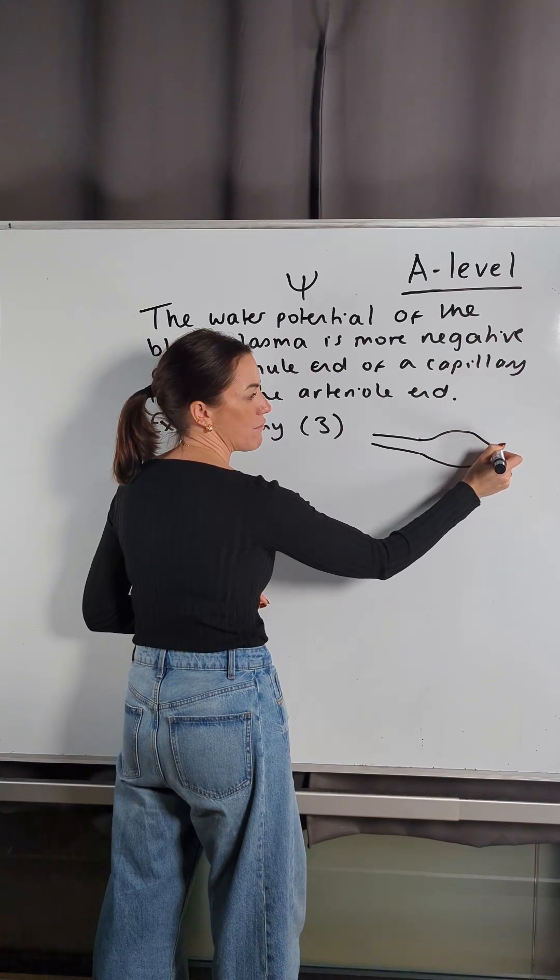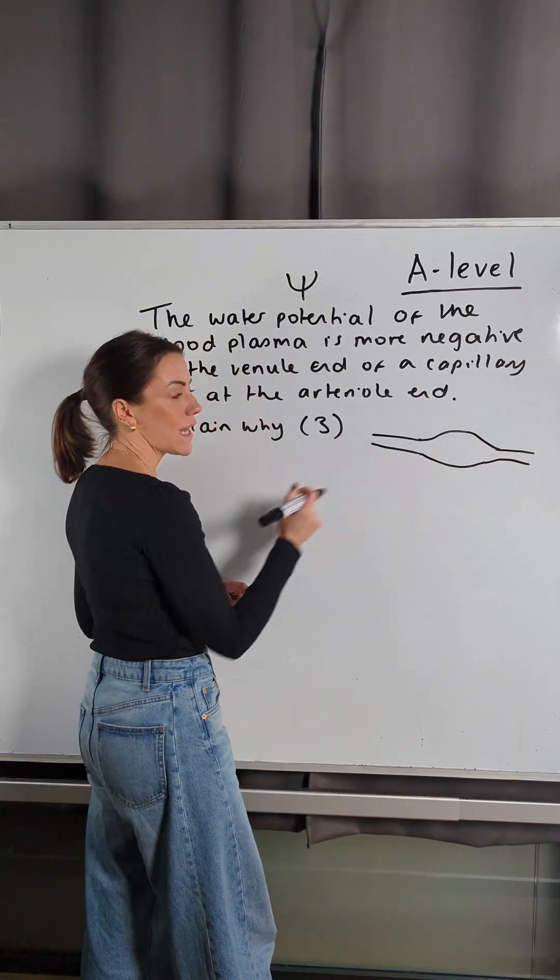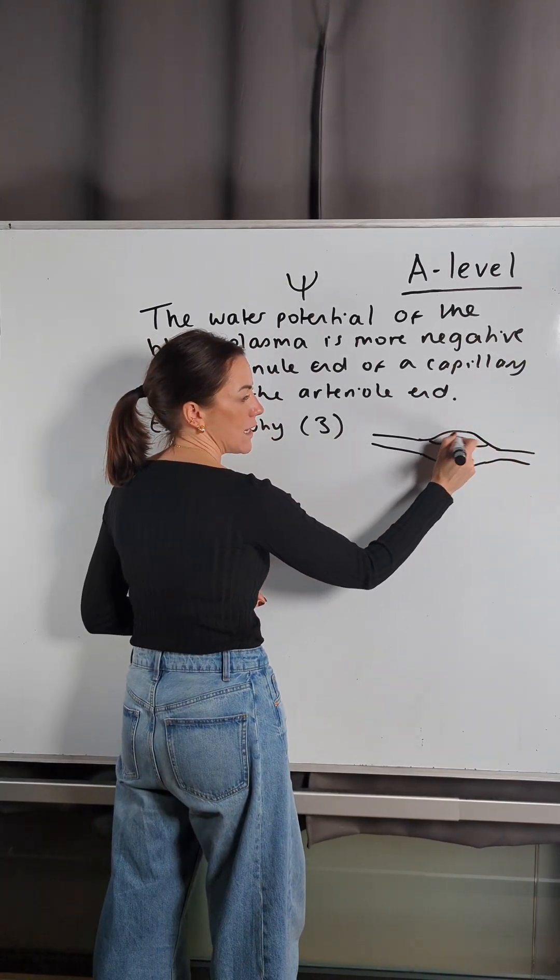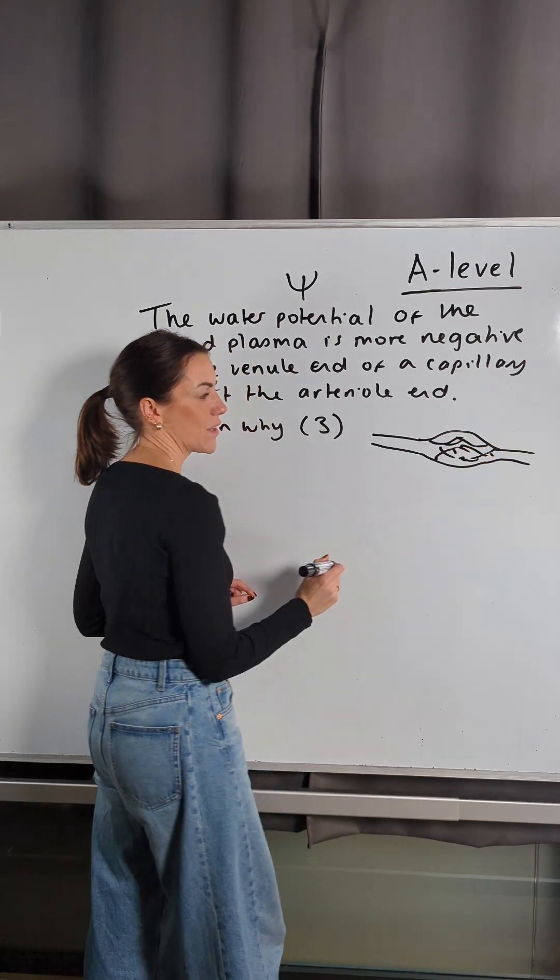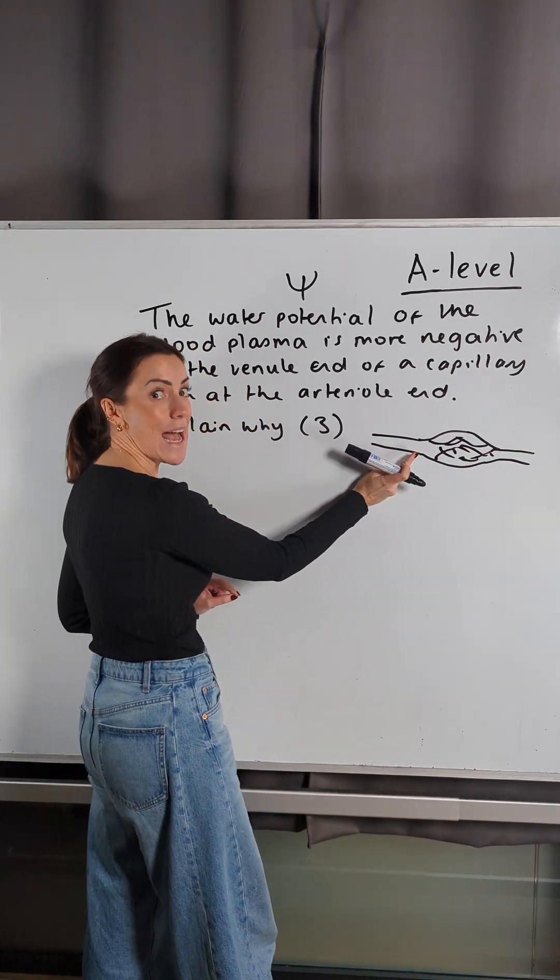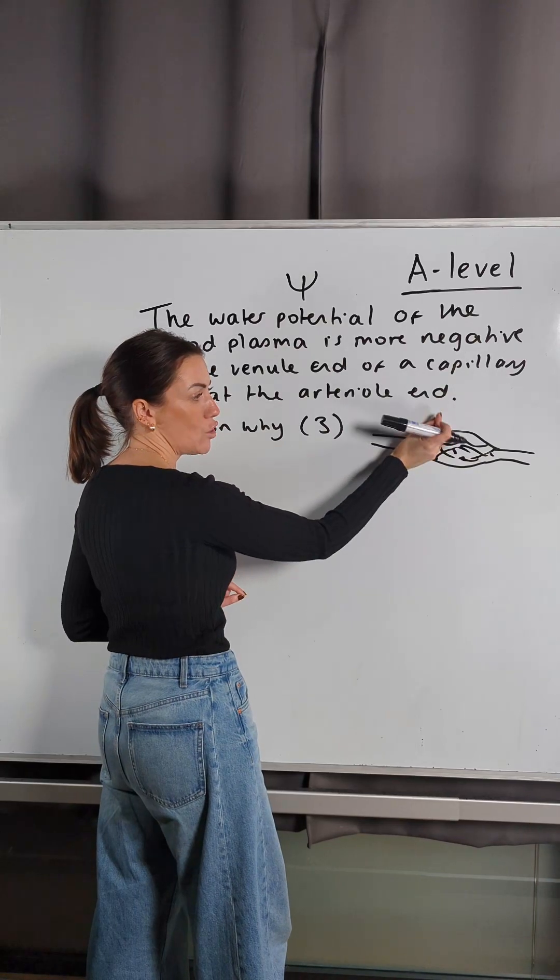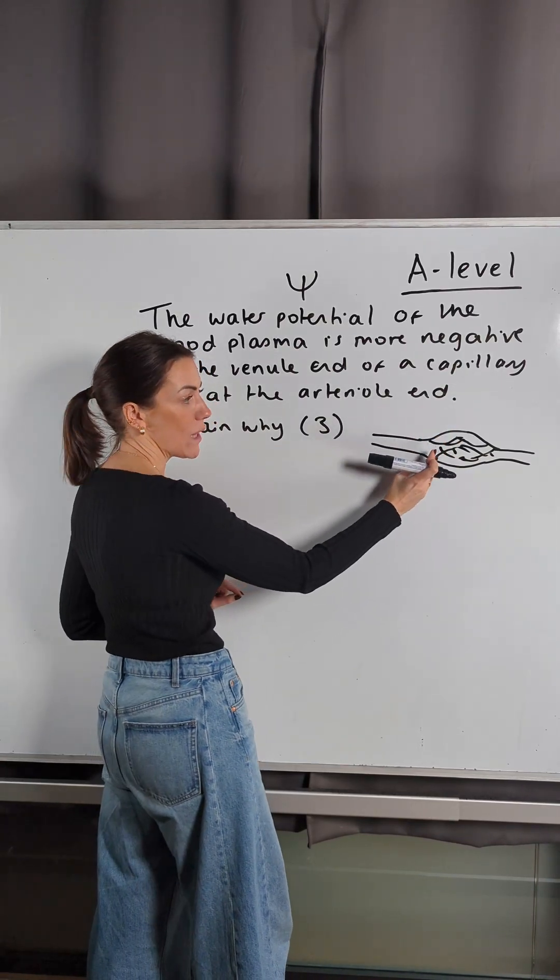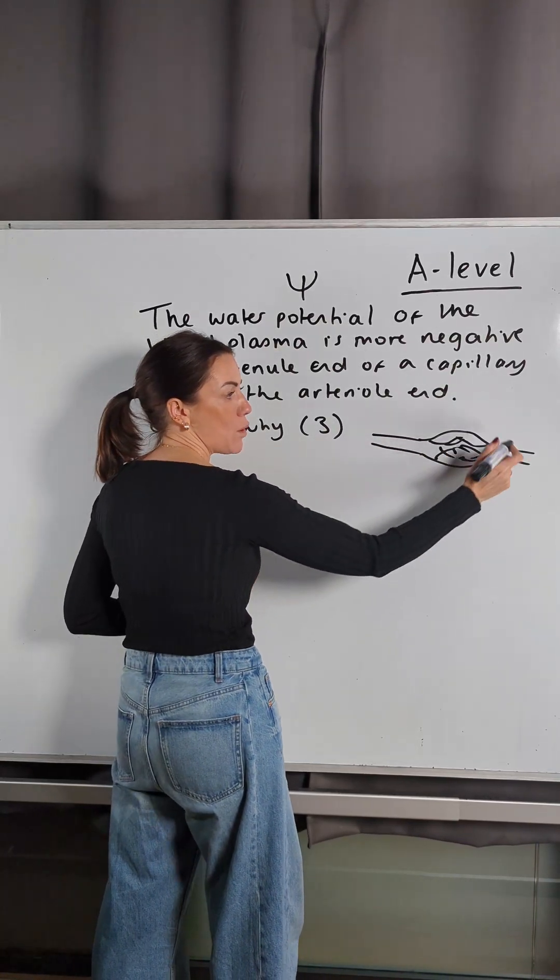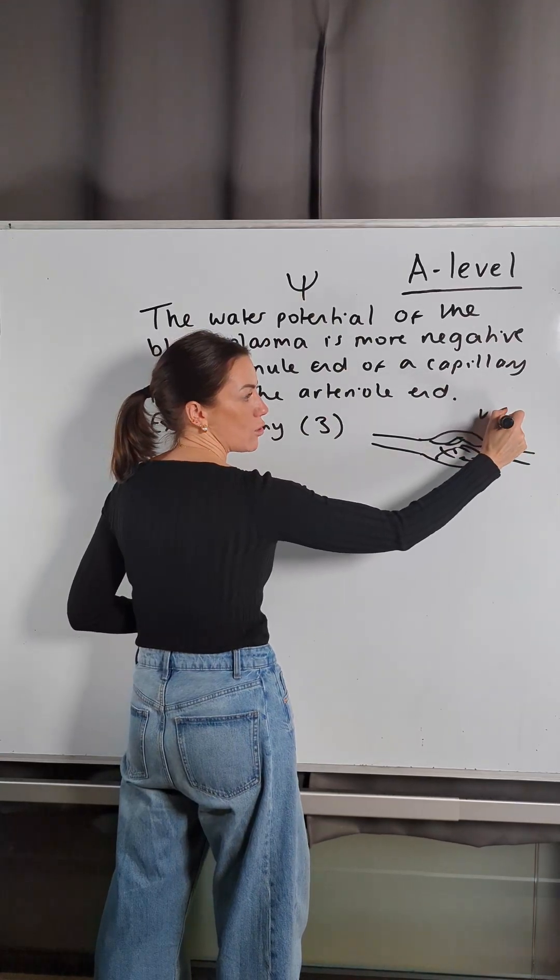I'll just do a quick diagram. You've got an artery carrying blood into the capillary network and then a venule carrying blood out. It's coming in at high hydrostatic pressure here, which is going to force water out at the arterial end, which will form the tissue fluid.